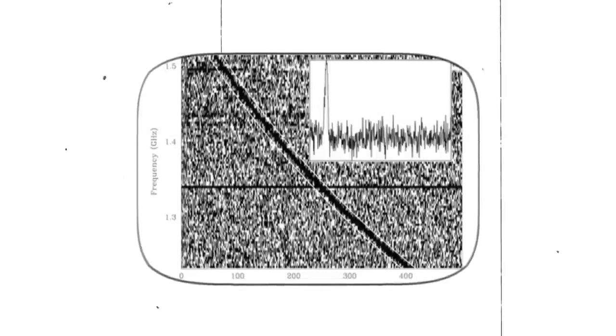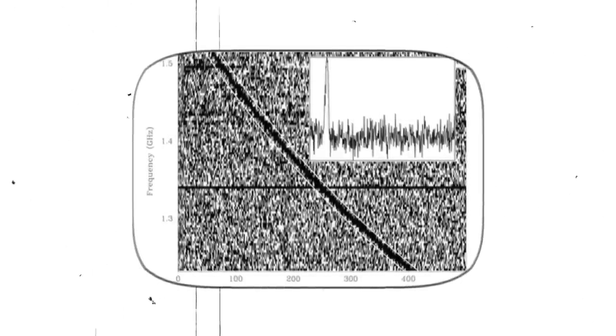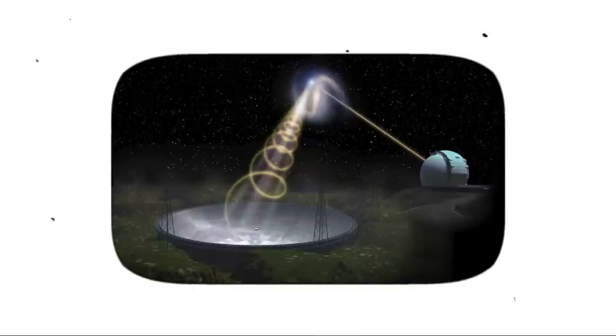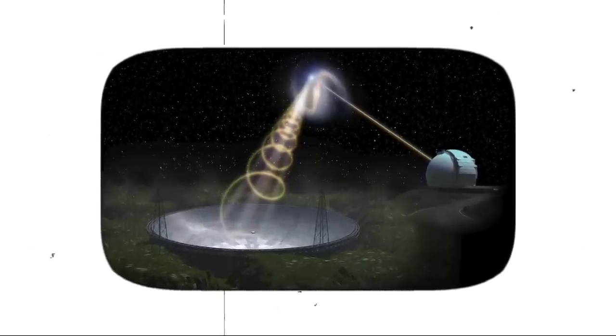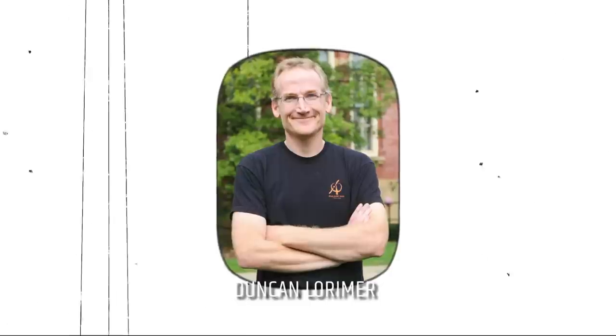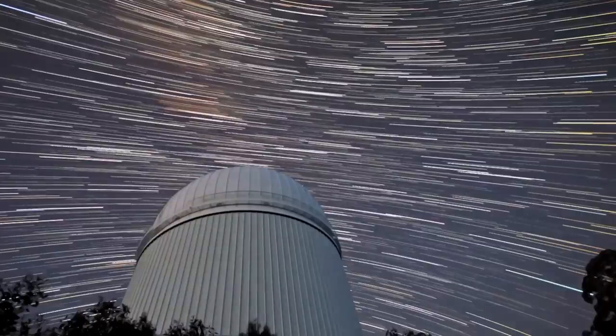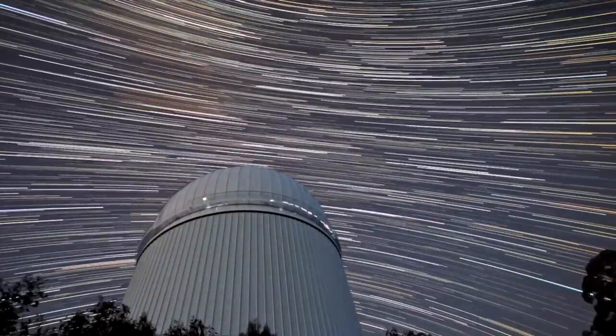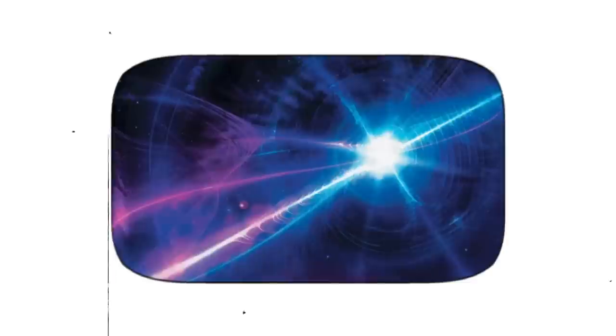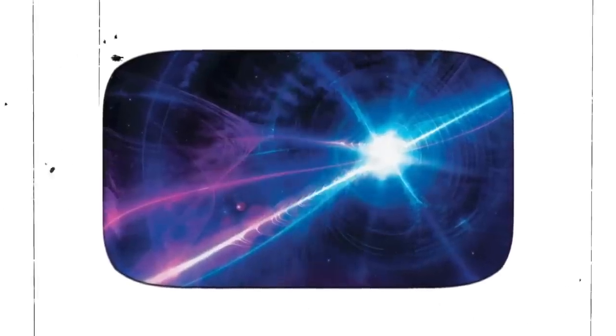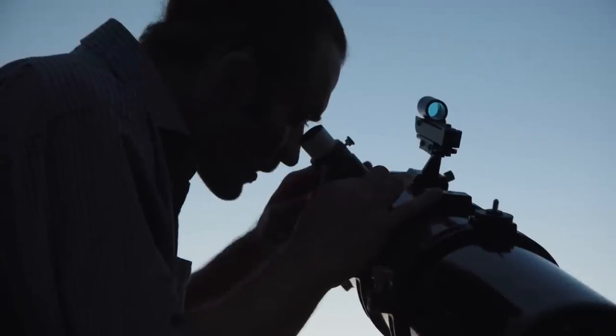The Lorimer Burst, also known as the first fast radio burst, FRB, is a high-energy burst of radio waves that was first detected in 2007 by Duncan Lorimer and his student, David Narkevic, while they were analyzing archival data from the Parkes Observatory in Australia. The burst lasted for only 5 milliseconds, but during that brief period, it released more energy than the Sun does in a month.